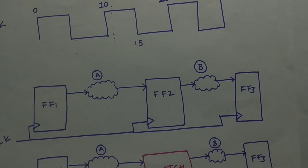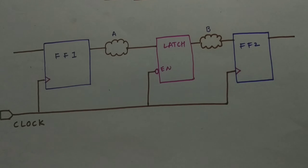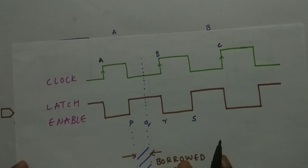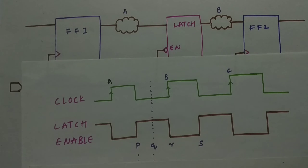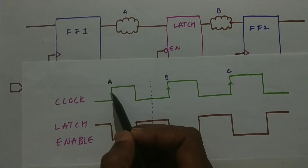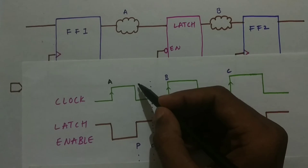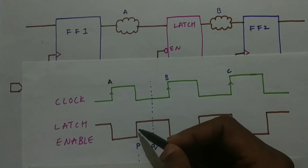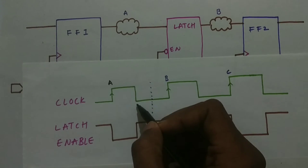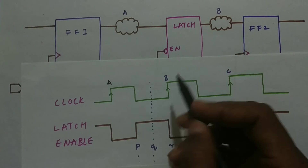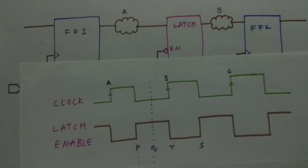Now let us consider a negative latch and see the same scenario. I'm using the same circuit of flip-flops but with a negative latch. Let's consider two cases: one where there is time borrowing and one where there is not. In the no-borrowing case, all functionality is correct — flip-flop 1 is able to send the data through logic A before the negative edge P. From A to P is our first path, flip-flop 1 to latch, and the latch must send the data to flip-flop 2 before positive edge B to meet its setup requirement.